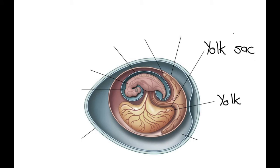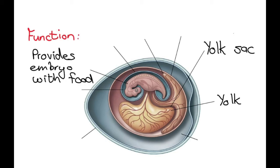Then we have the yolk sac, which contains the yolk, that would be the yellow part of the egg if you're looking at chicken eggs and duck eggs, and the function of the yolk is to provide the embryo with food.